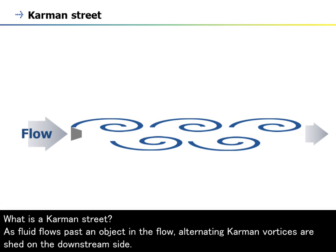What is a Karman Street? As fluid flows past an object in the flow, alternating Karman vortices are shed on the downstream side.